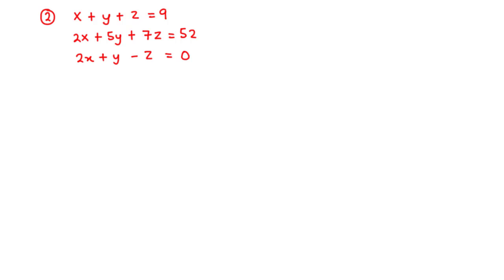Let's take the second example. In this example, we are given a system of linear equations: x plus y plus z equals 9, 2x plus 5y plus 7z equals 52, and 2x plus y minus z equals 0. We are going to solve this system of linear equations for x, y, and z using Gaussian elimination.